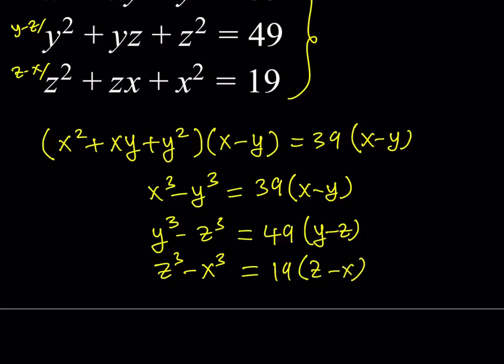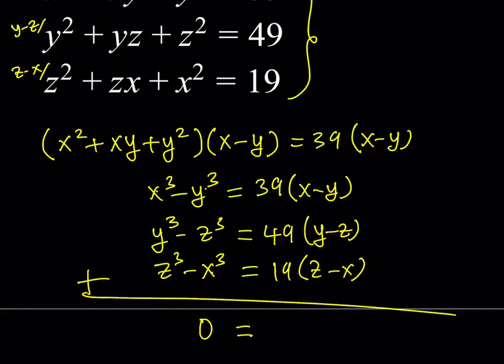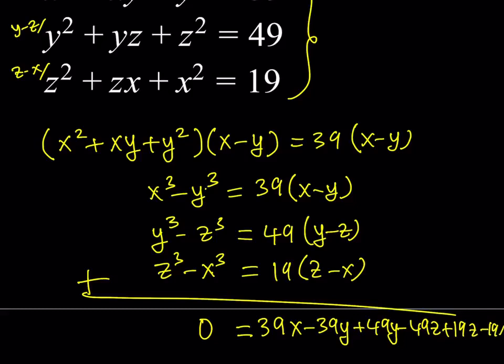Now here's the coolest part. We're going to add these equations after the manipulation. When we add these up, you're going to notice that negative y cubed and y cubed is 0, x cubed minus x cubed is 0, z cubed minus z cubed is 0. So the left-hand side is 0. That's why we're adding this — the whole purpose is to get a 0 on one side. Now expanding the right-hand side: 39x minus 39y plus 49y minus 49z plus 19z minus 19x.